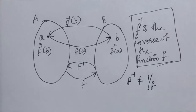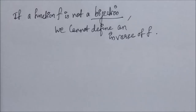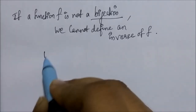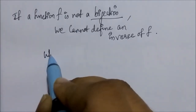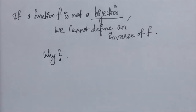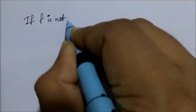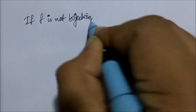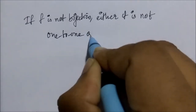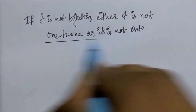If a function f is not a bijection or one-to-one correspondence, we cannot define an inverse. If f is not a bijection, then either it is not one-to-one or it is not onto — either of these cases will prevent us from defining an inverse.